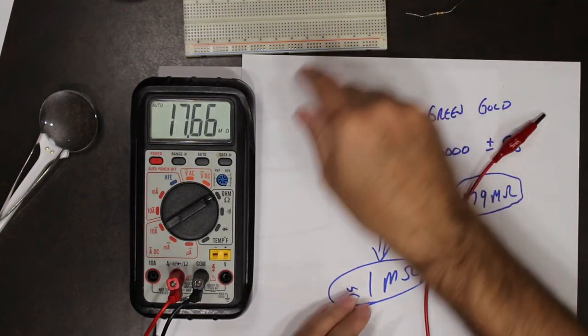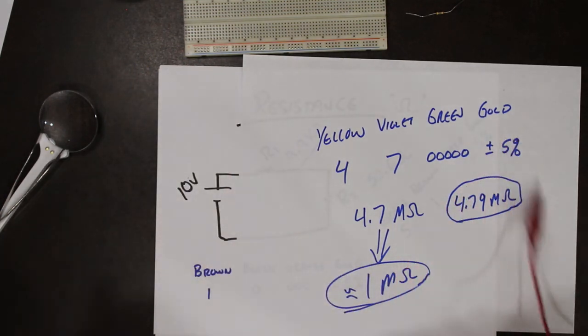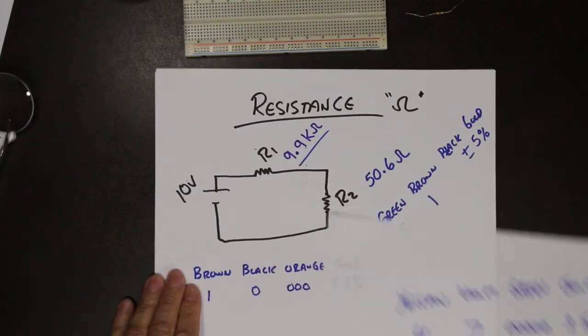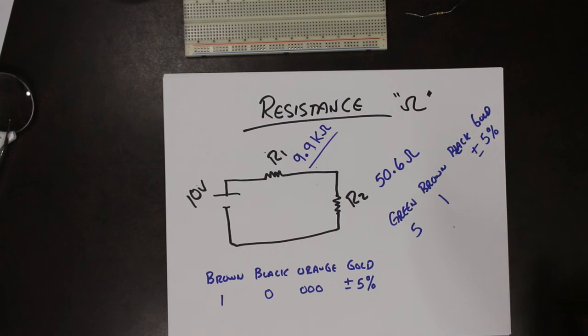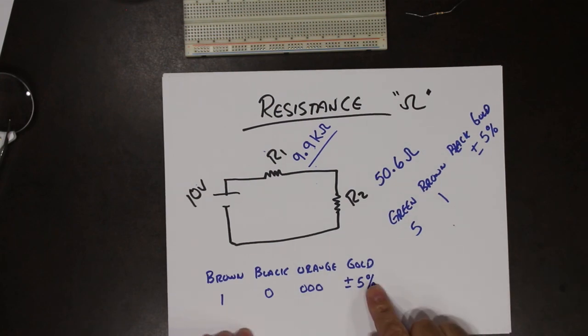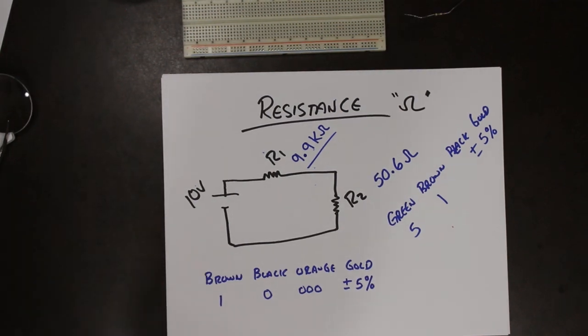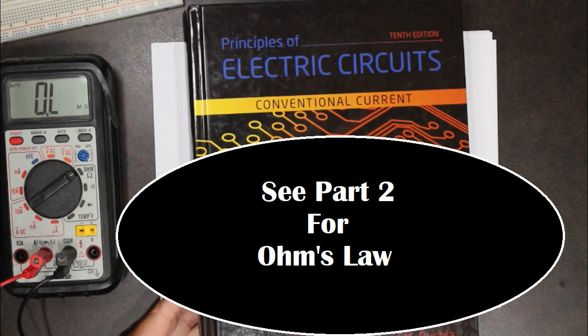So any time that you are taking measurements, do not touch the leads of the resistor, or else your body resistance will affect what you're actually measuring. In order to measure resistance, pull the resistors out of the circuit, take your measurements, and don't touch the leads.